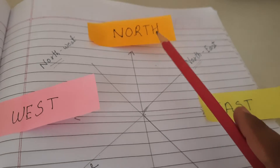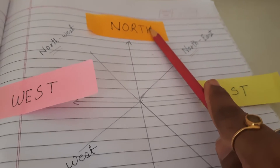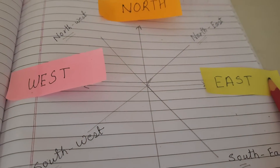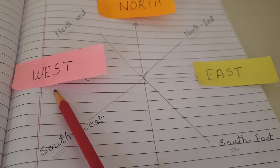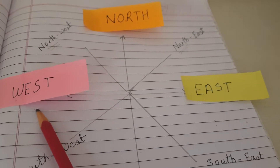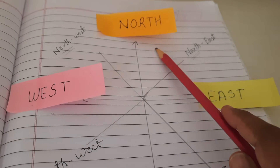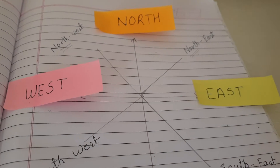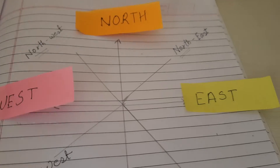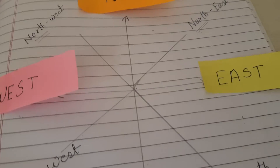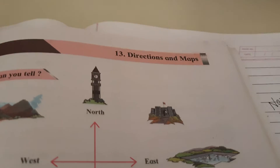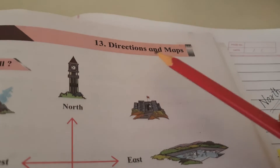There are 4 main directions that we have already covered: North, South, West, and East. These are the main directions. We did one activity in the online session also. Now in the textbook on page number 81, lesson number 13 - Directions and Maps.